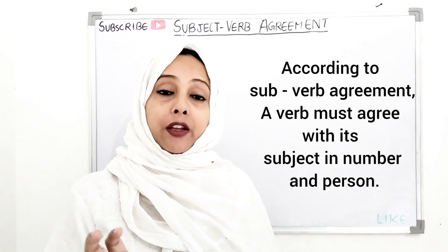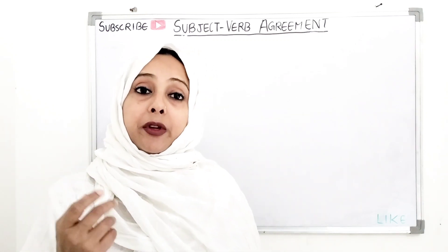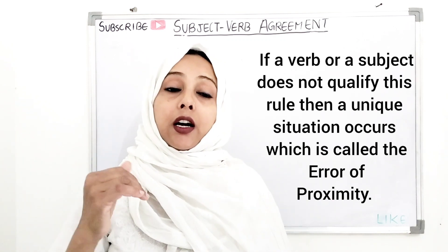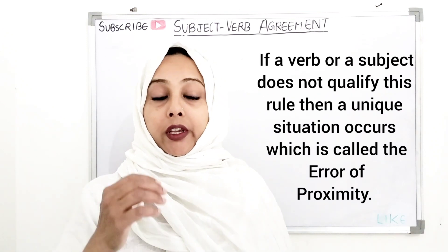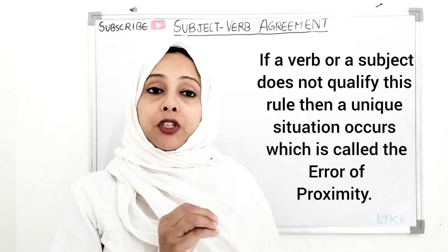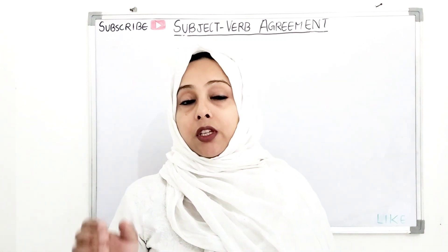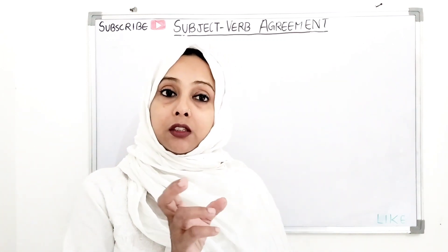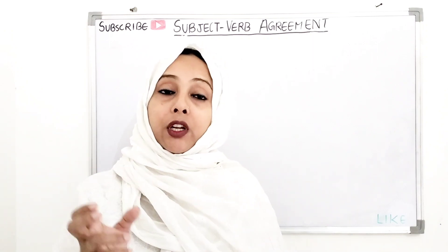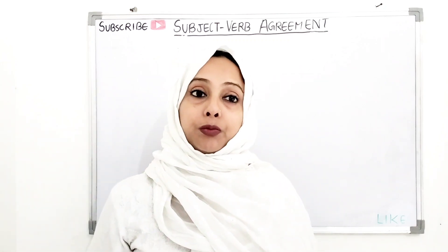Let's understand why we need an agreement between subject and verb. If you do not agree with the verb in your statement — when the verb does not agree with the subject in terms of numbers or persons — we call this the error of proximity. If we do not have agreement between the subject and verb, that situation is called error of proximity.